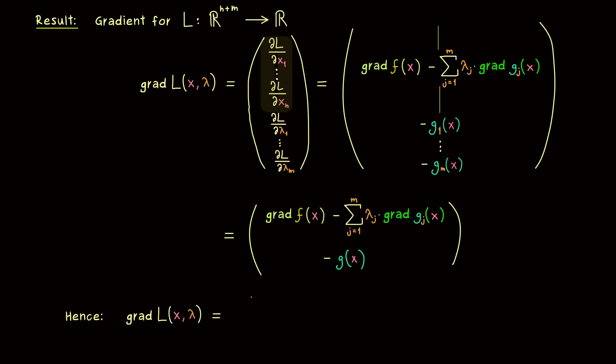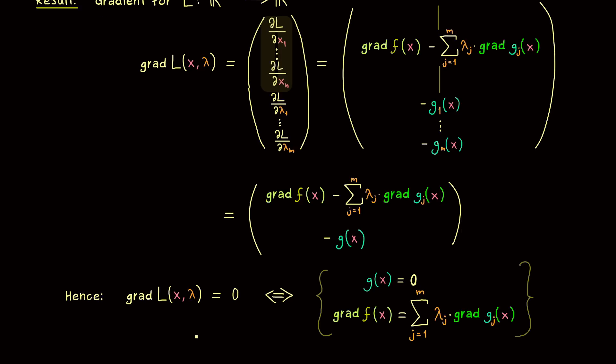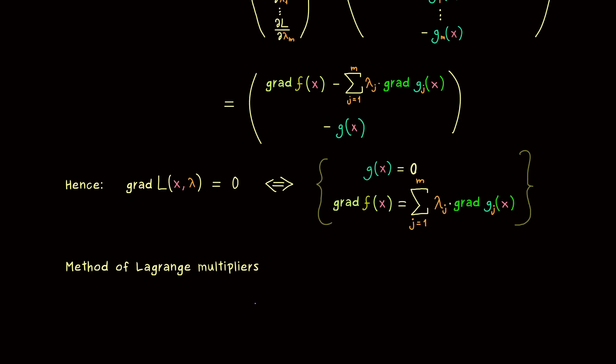We see the gradient of the Lagrangean is zero if and only if our two equations are satisfied. The left-hand side here is much easier to remember because it looks exactly like we know it for finding extrema in the normal way. If we have constraints, we do the same thing as always: we set the gradient to zero and search for solutions. However, in the case of constraints, we do it for the Lagrangean instead of doing it for the function f. This is exactly how you should remember this method of Lagrange multipliers.